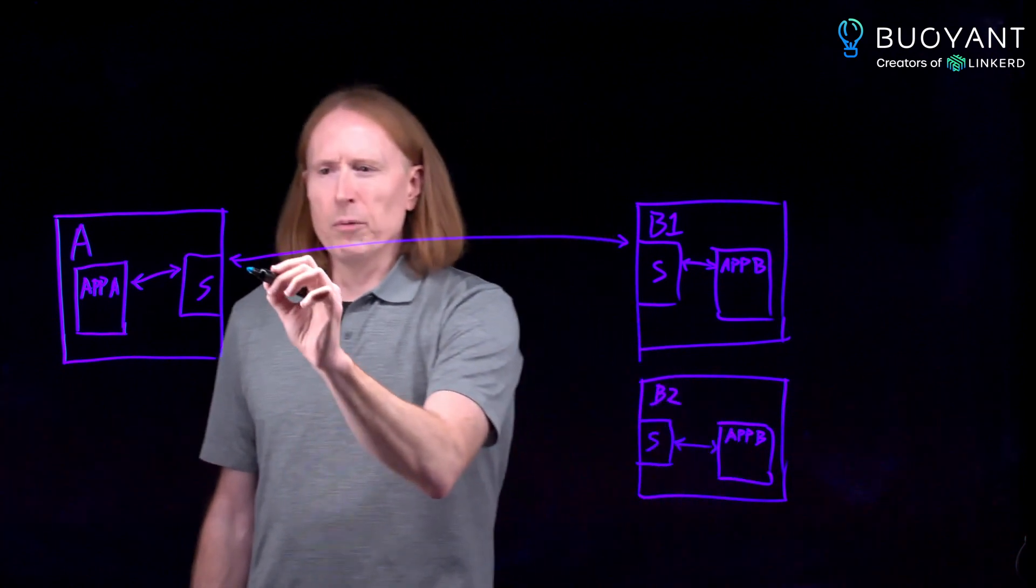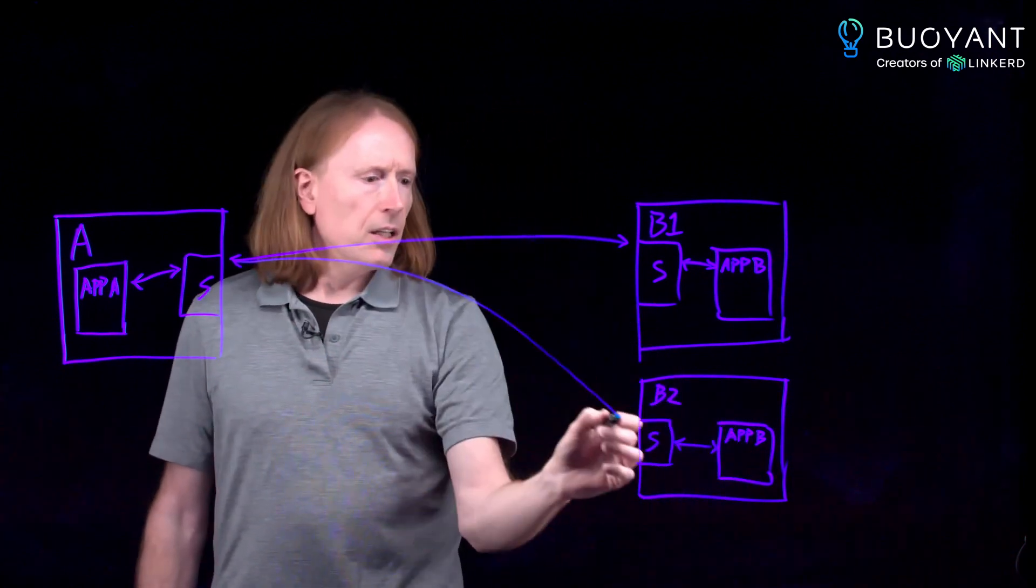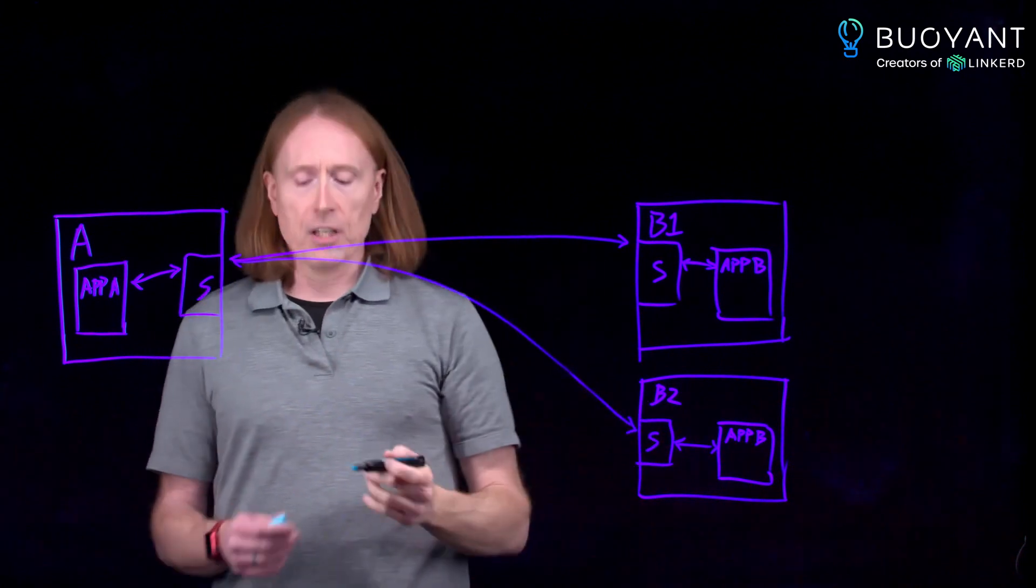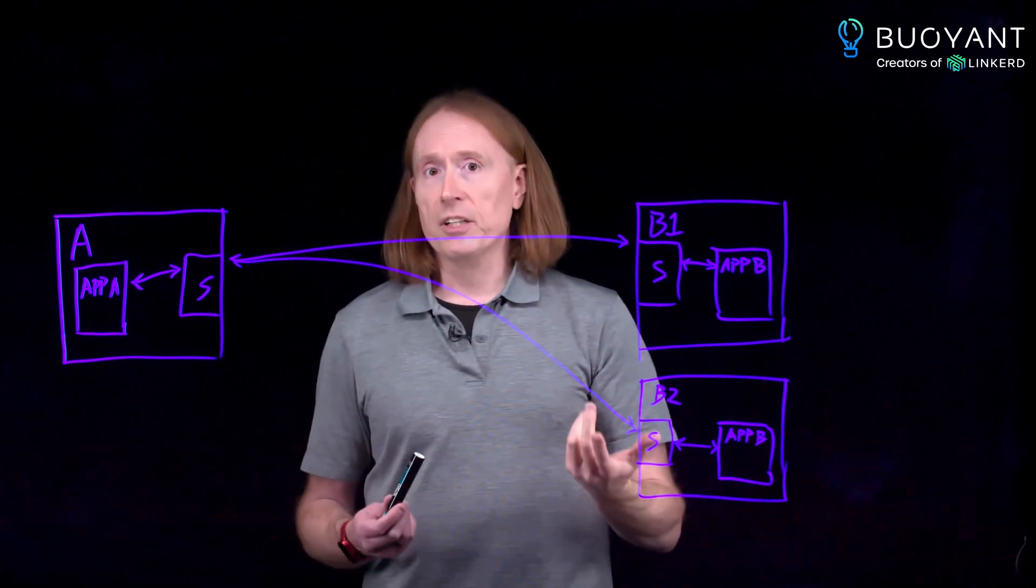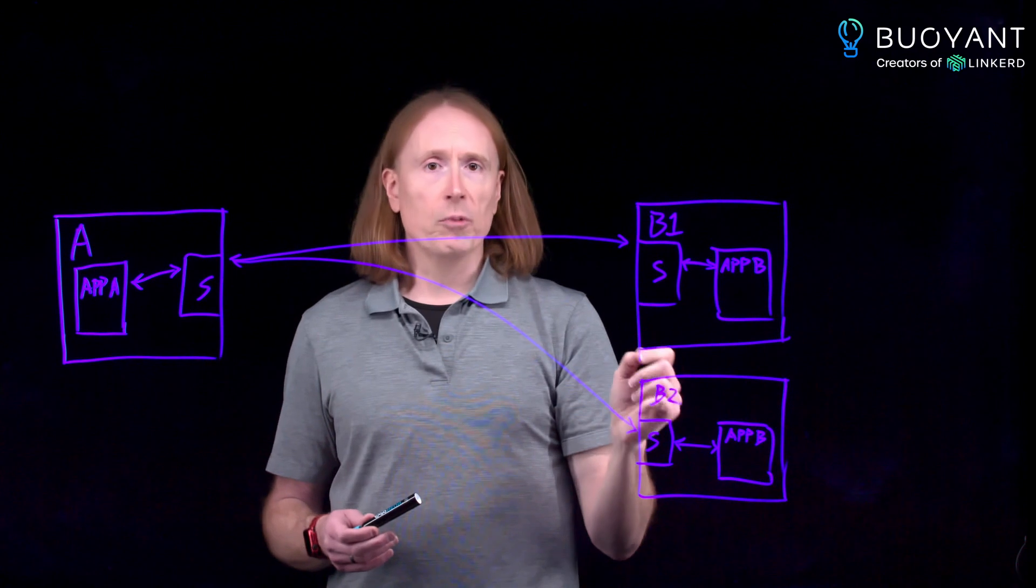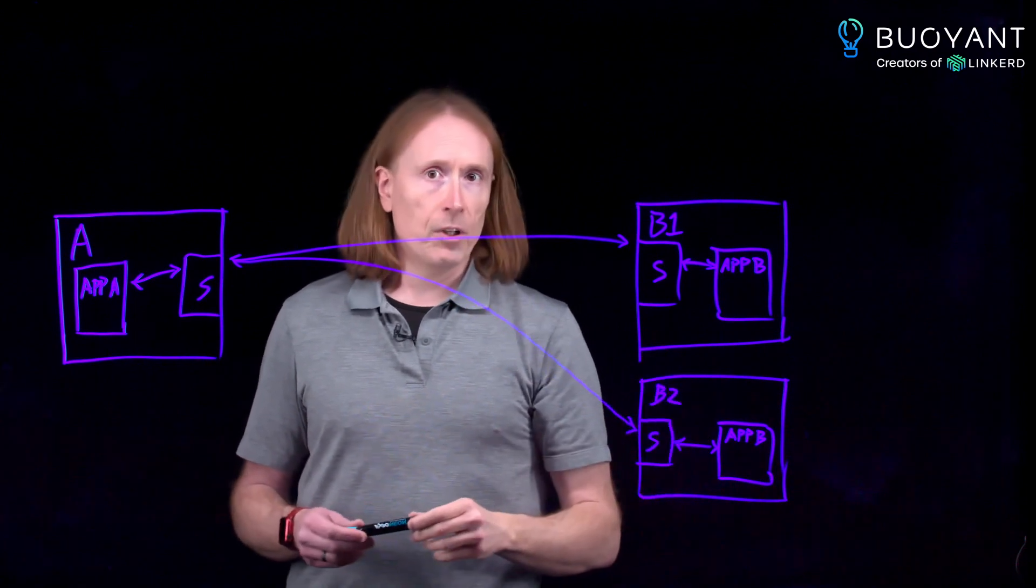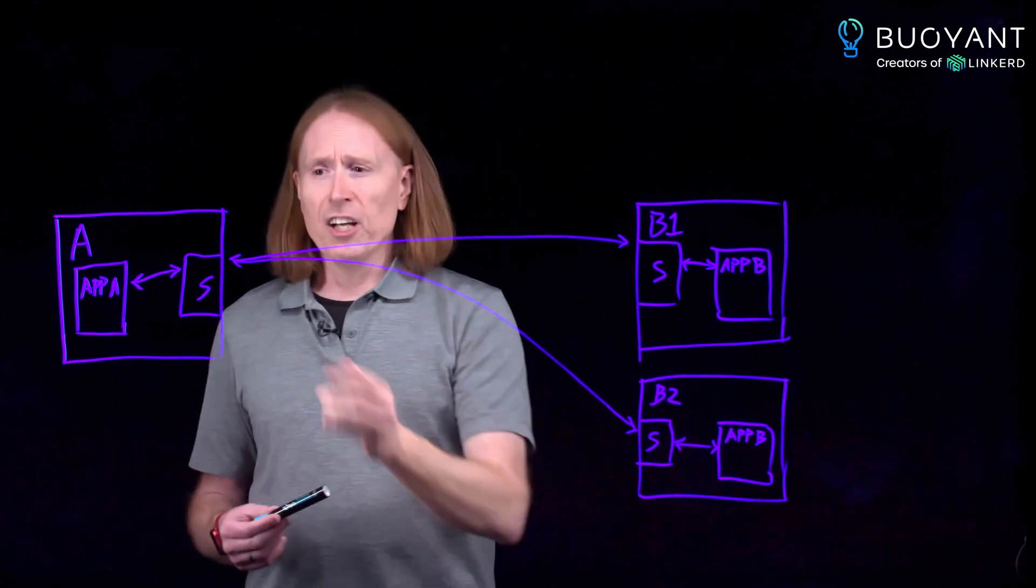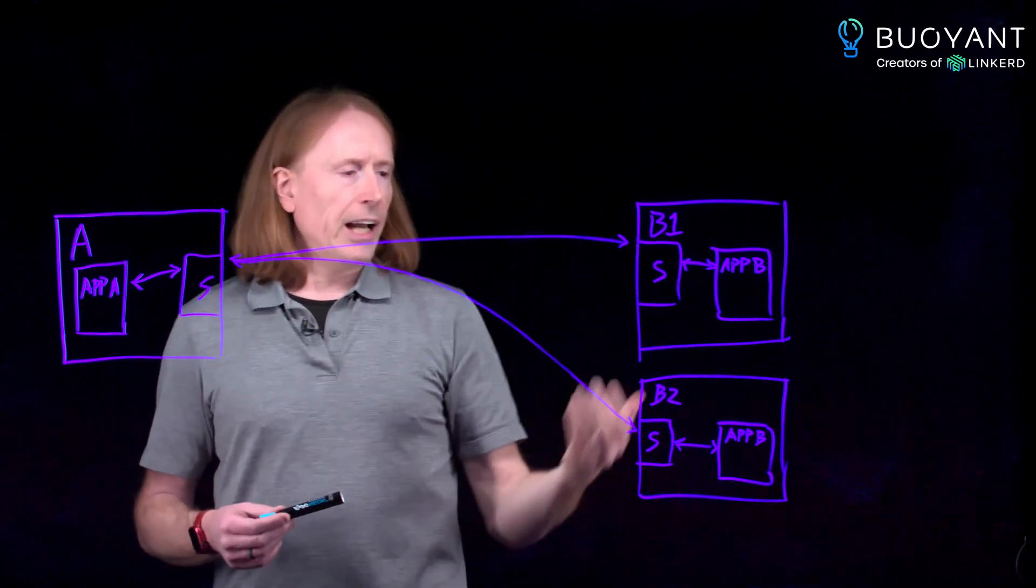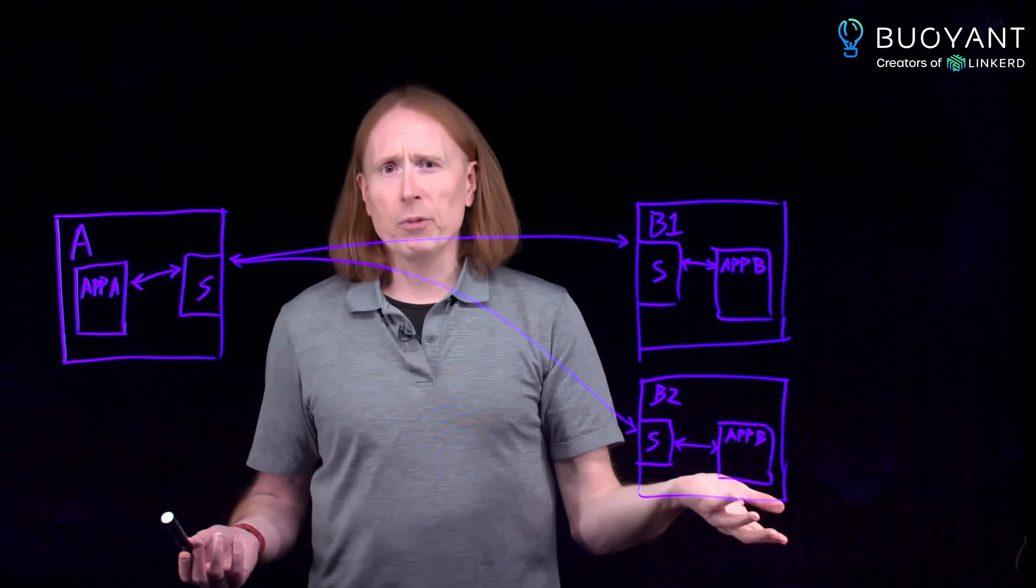This ends up being a pretty big distinction because if you don't have a mesh, the only thing that could happen here is full connections. So for example, if you're doing gRPC, with the service mesh, you can have one gRPC request going to be one and the second one going to be two, whereas without the service mesh, probably this will just make a single connection to be one, funnel all its requests over it, and you don't have anything going to be two.